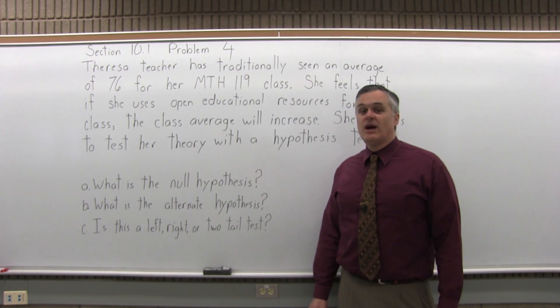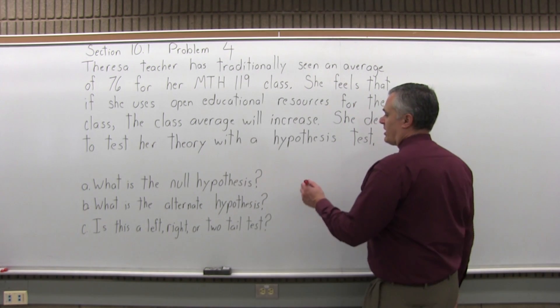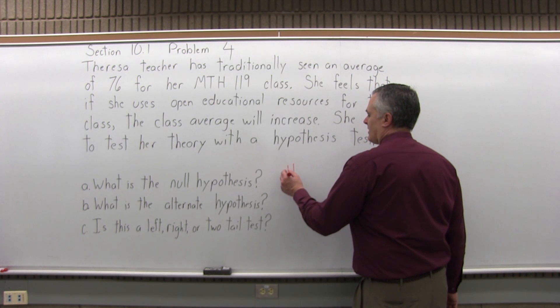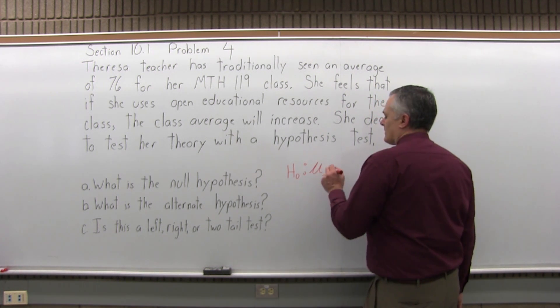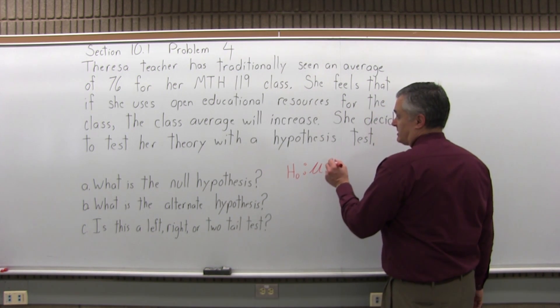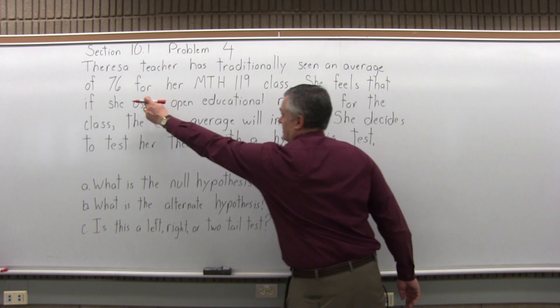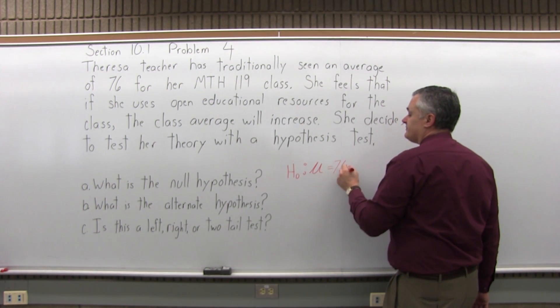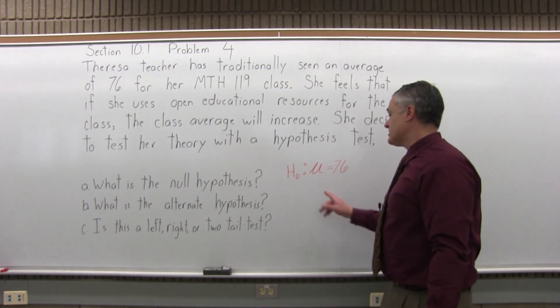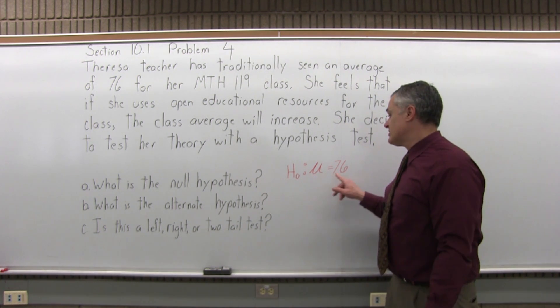So what is the null hypothesis? The null hypothesis, the symbol is capital H for hypothesis, subscript of zero for null hypothesis, put a colon. And it's that the population average, the symbol is mu, is equal to 76. So that's the null hypothesis that the population average is 76.